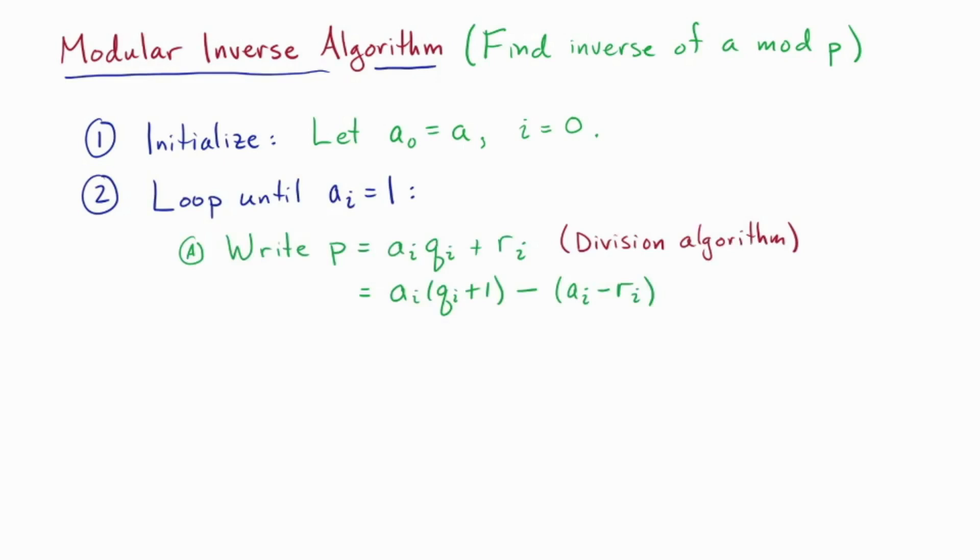In the loop, first we write p as a multiple of ai plus a remainder. Let's call it ri. This is just the division algorithm. And we'll actually write it in terms of the next highest multiple of ai also. So here the remainder looks like ai minus ri.